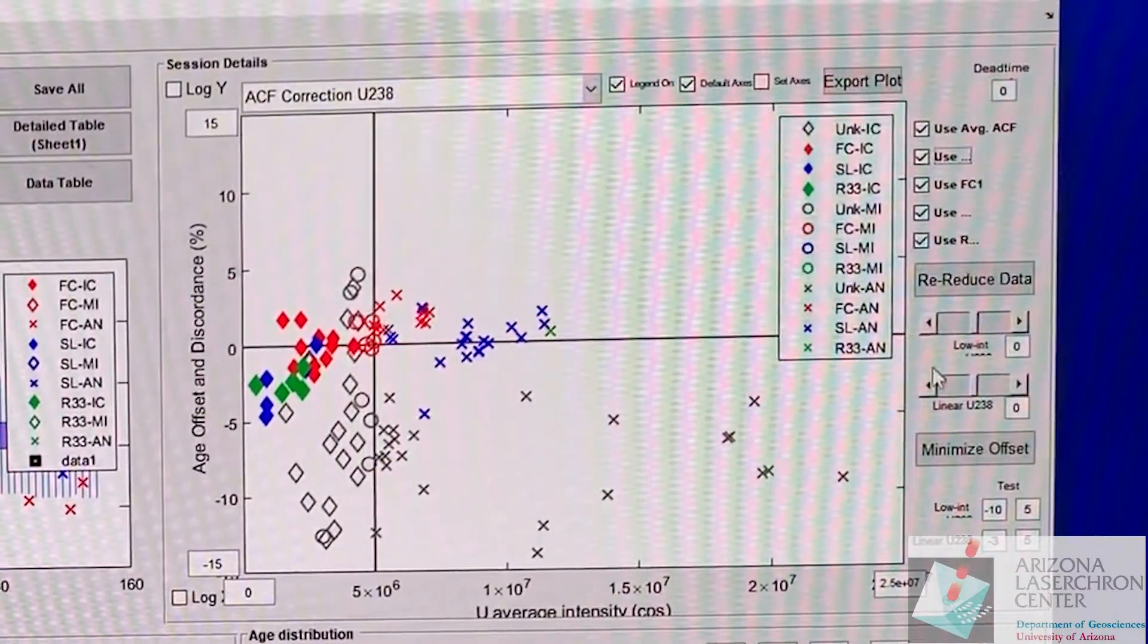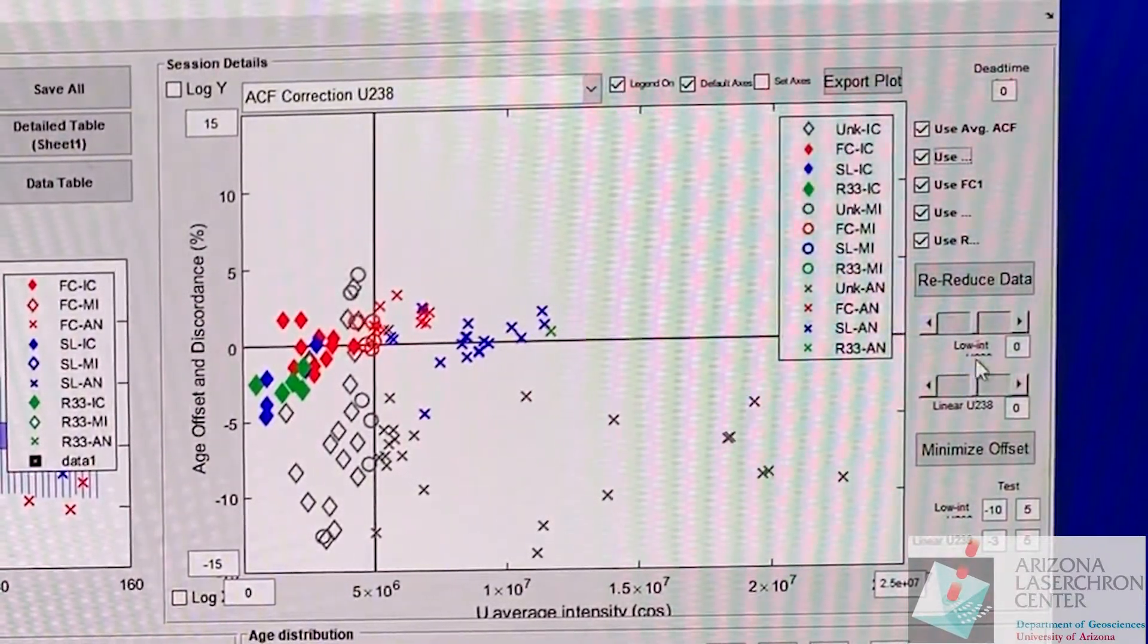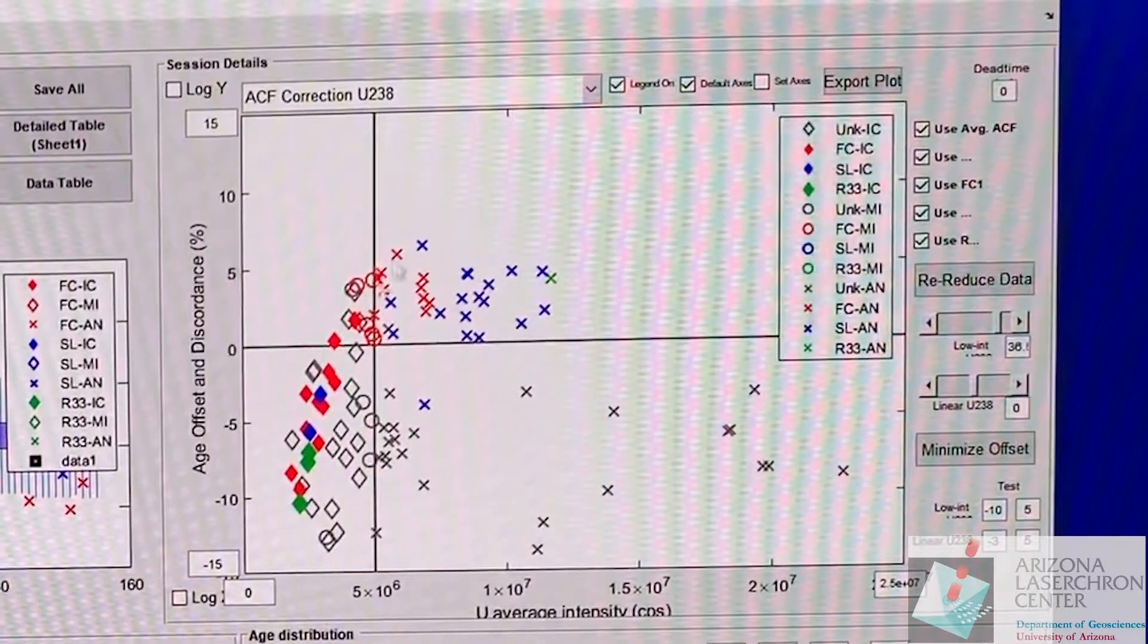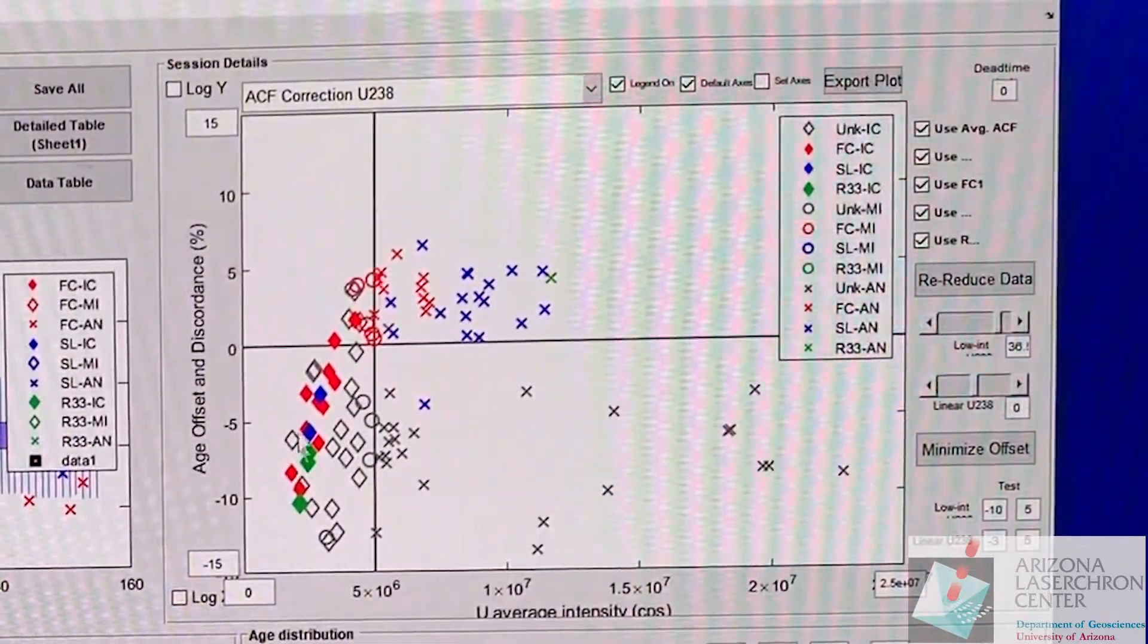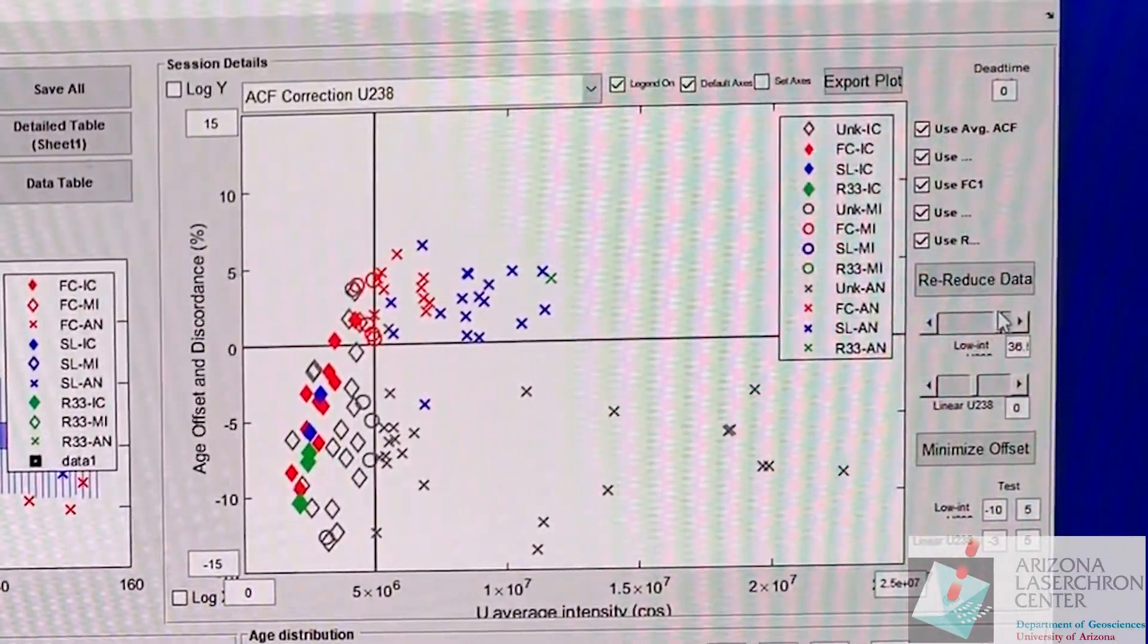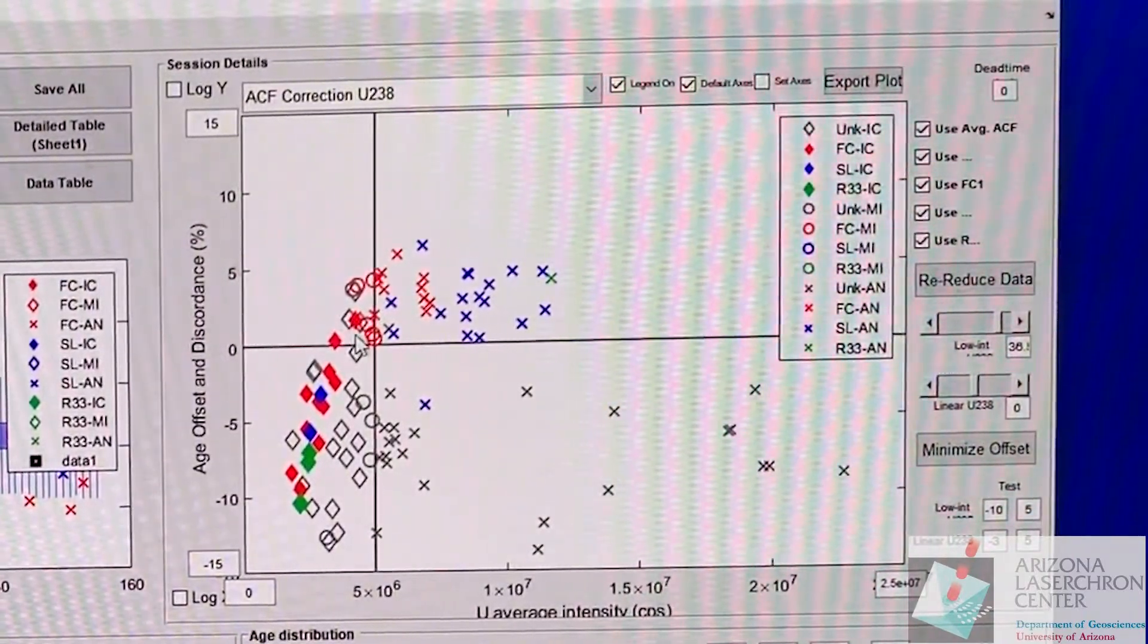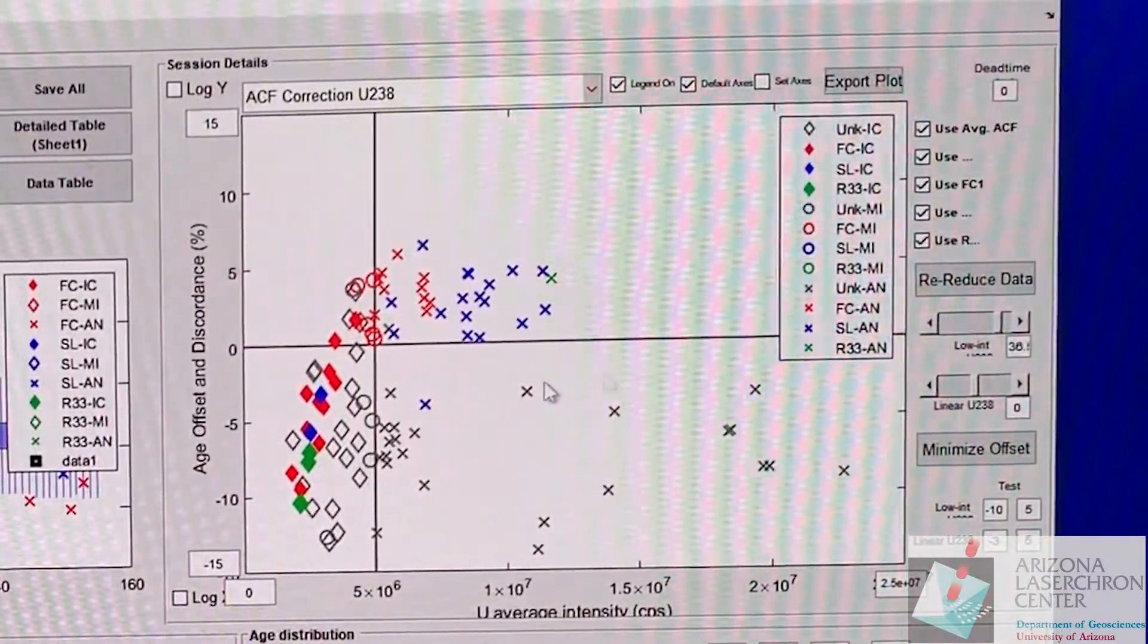The next thing you want to do is change the low intensity and linear 238 sliders. You can play around with these a little bit and you see that it starts to change how the plots look. The idea is to get all of these different symbols at zero because that means you have zero percent offset from the known ages for your standards and also minimal discordance for your unknowns.